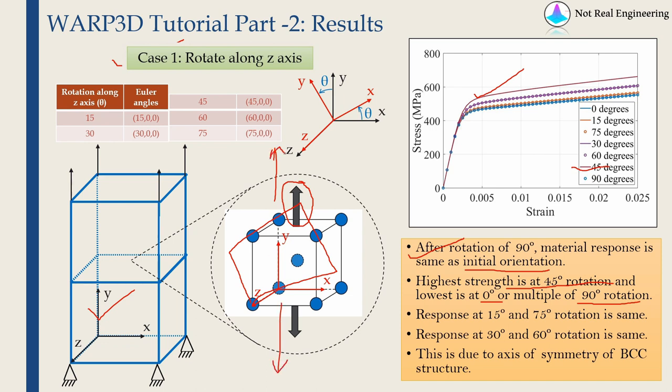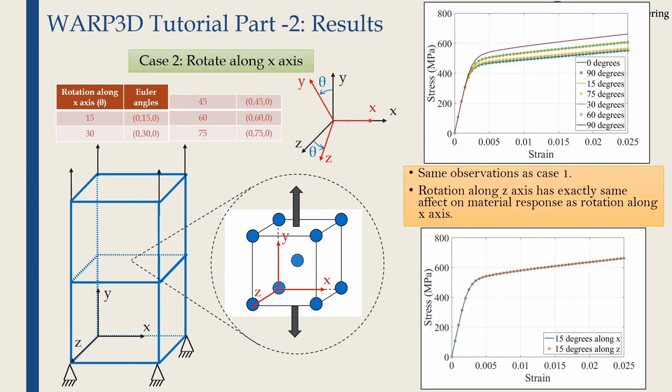Now in next case, we are going to rotate it along X direction. As shown over here. The red X and black X remain same. And we are rotating it along X direction. Now in this case, we will observe exactly same behavior. This is because the loading is in positive Y direction. So loading is over here. Now if you rotate this crystal along this Z direction or along this X direction, it is not going to change anything. So we will get the same response. The strength will increase as we rotate the crystal. It will be maximum at 45 degrees. And again it will decrease and it will reach the initial value when rotation is 90 degrees.